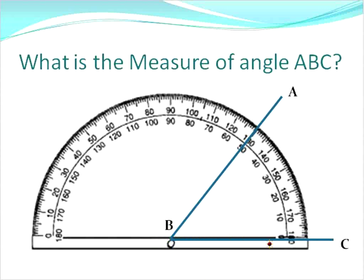So that our line, one of our legs, in this case BC, the line segment BC will go right along this baseline, and it lands right on the angle of zero.